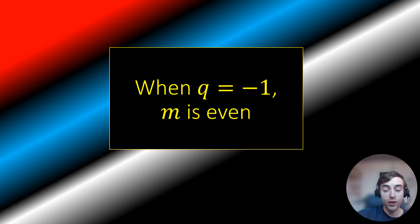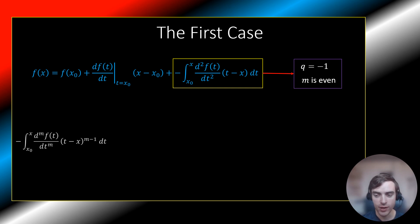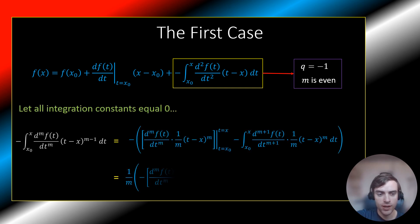Let's examine the first case. We must expand an integral using integration by parts that follows the general form with a Q value of negative one and an M value of an even integer. We can be at any point in our Taylor series such that the expandable integral is of this particular form, which will occur every two terms or every two expansions. Let's expand this integral, assuming that all future integration constants are set to zero.